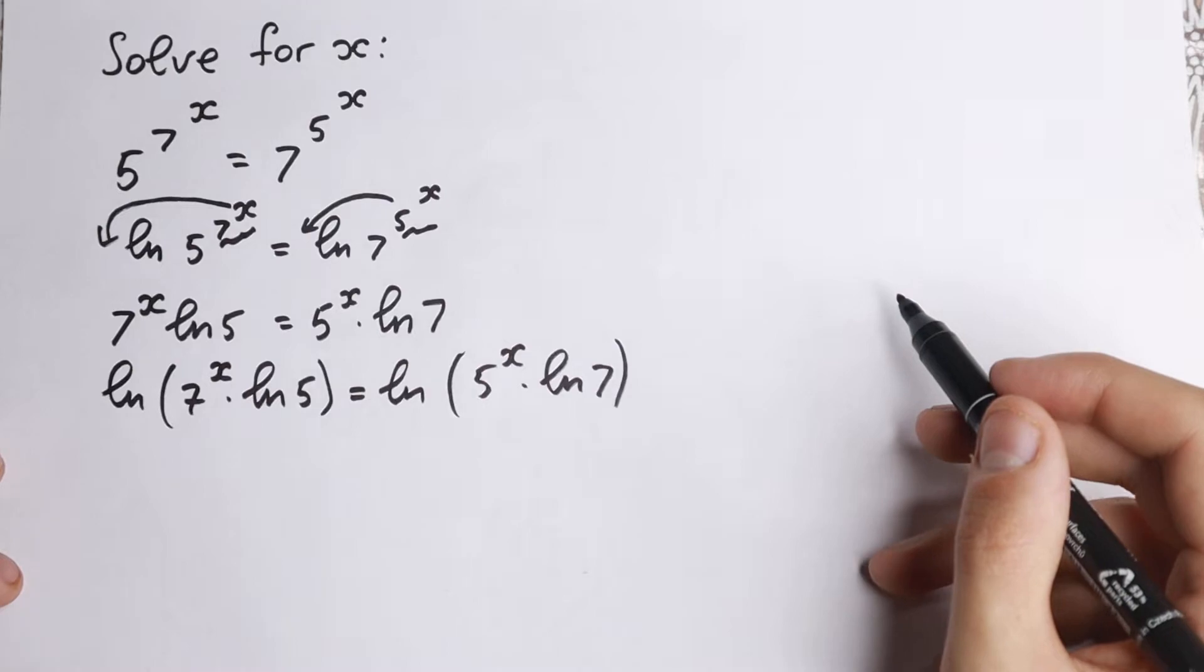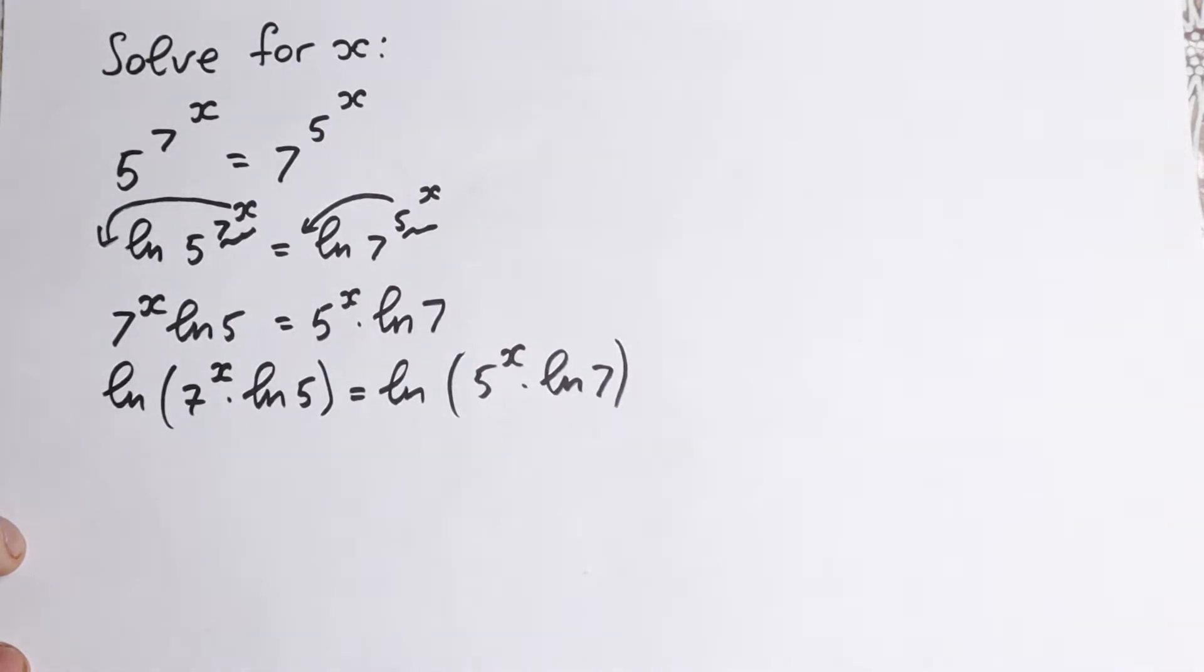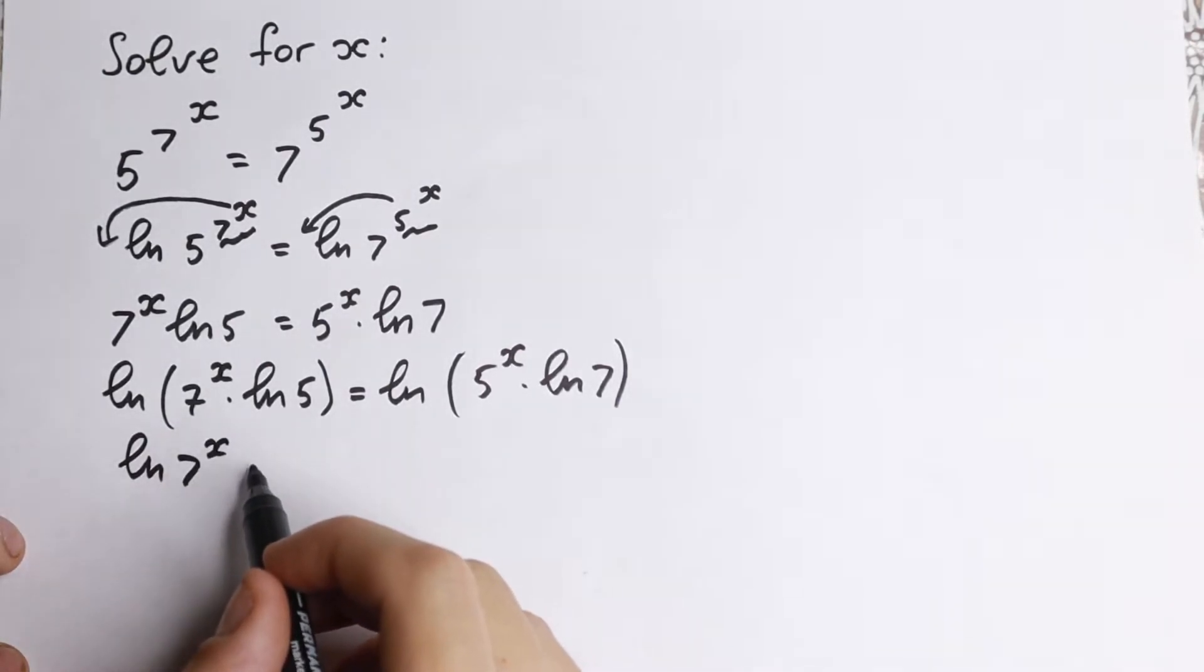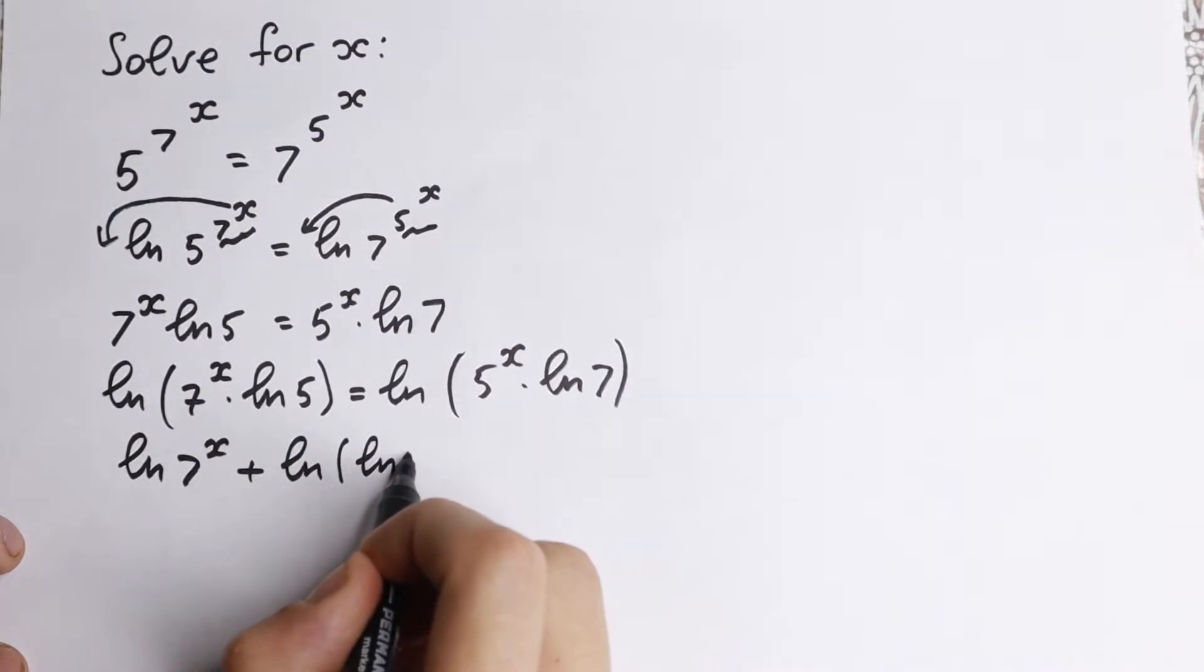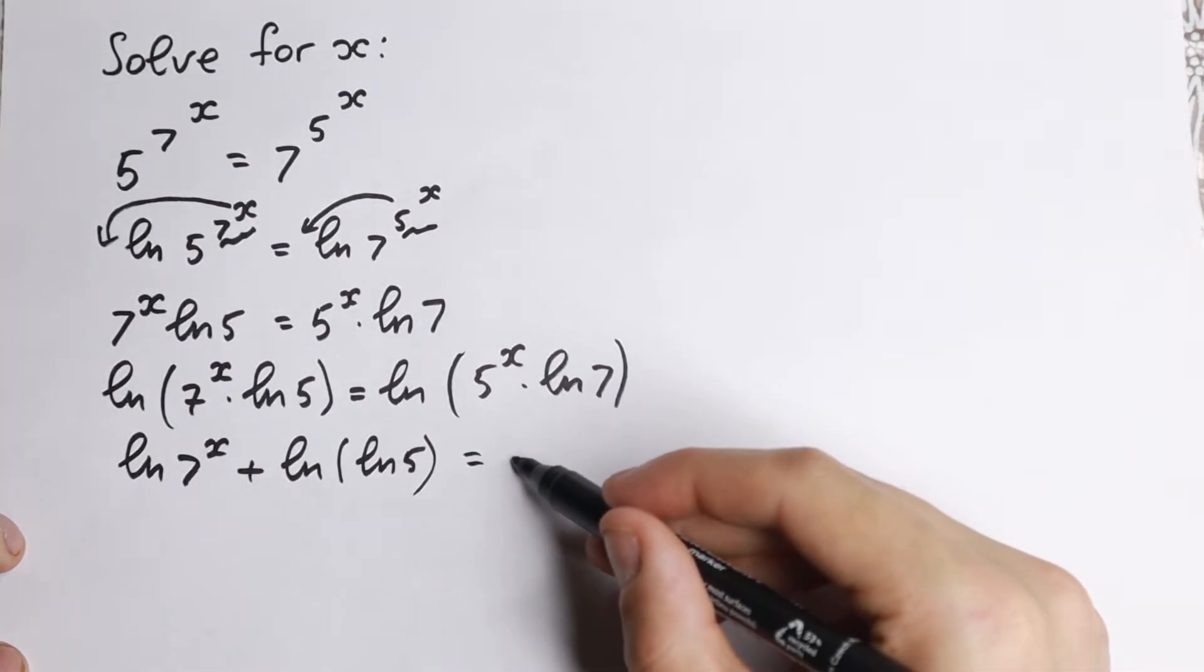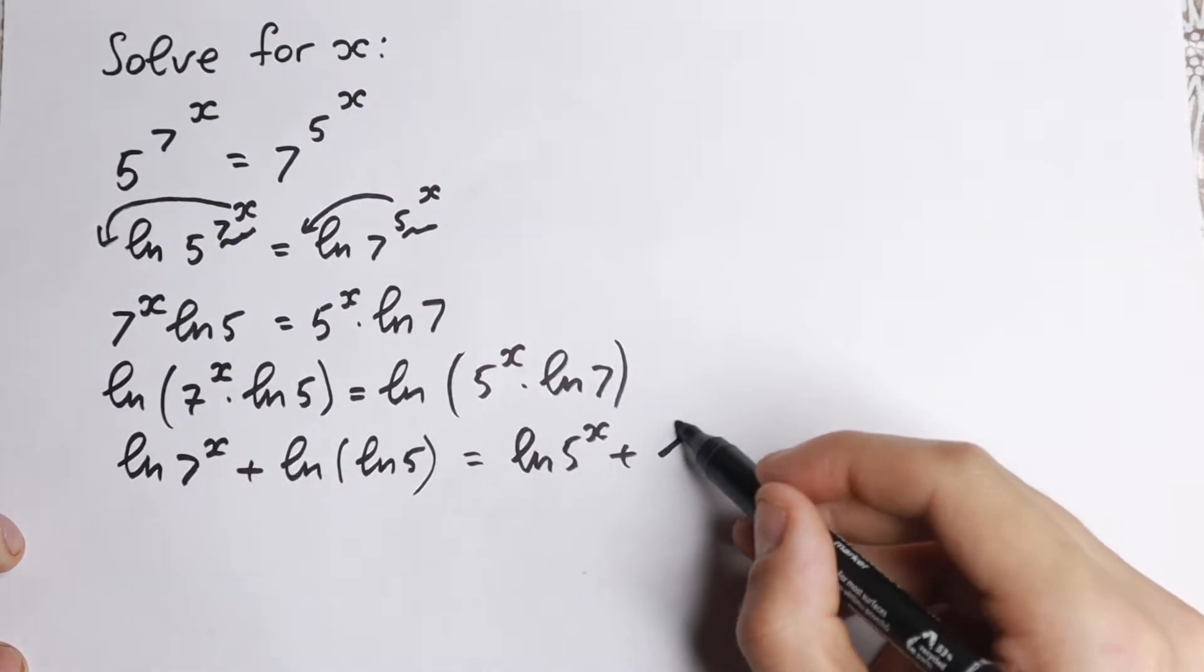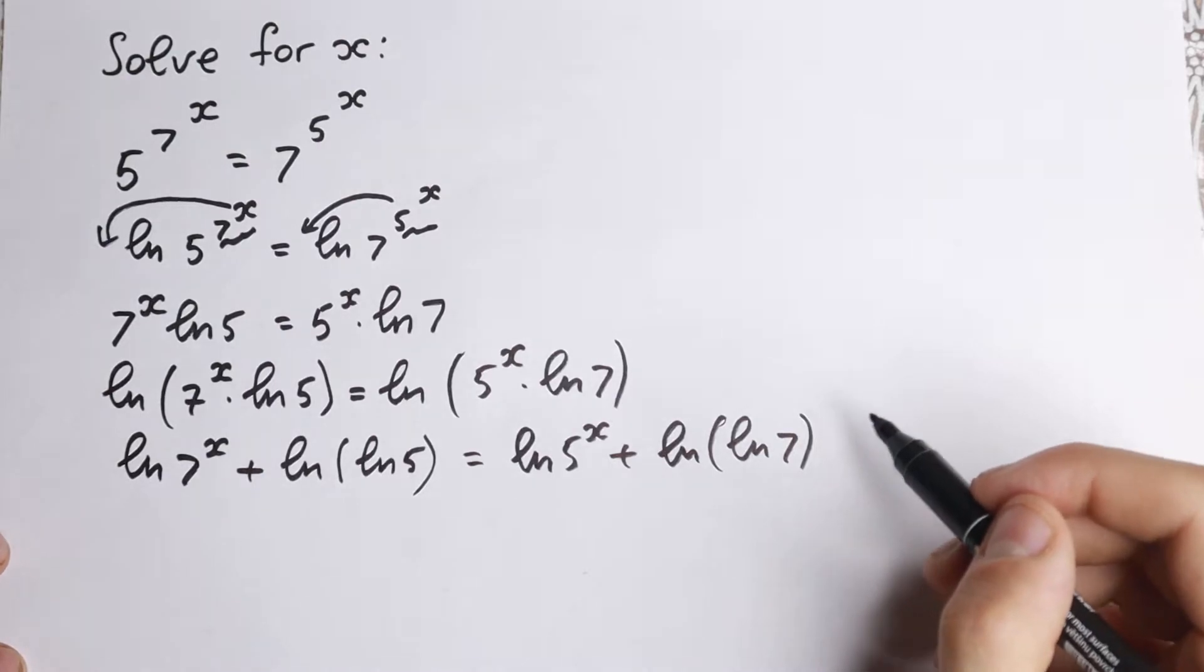And if you apply this, how can we write it? We can write it as a sum of 2 logarithms, because right here we have a product. First of all, we have natural log of 7 to the x plus natural log of natural log 5. And on the right-hand side, we have natural log of 5 to the x plus natural log of natural log 7. So we have this expression.